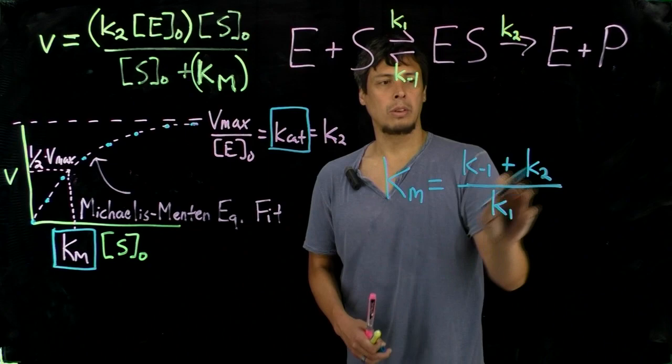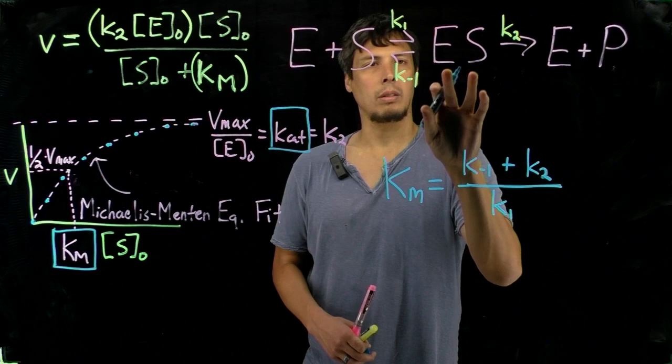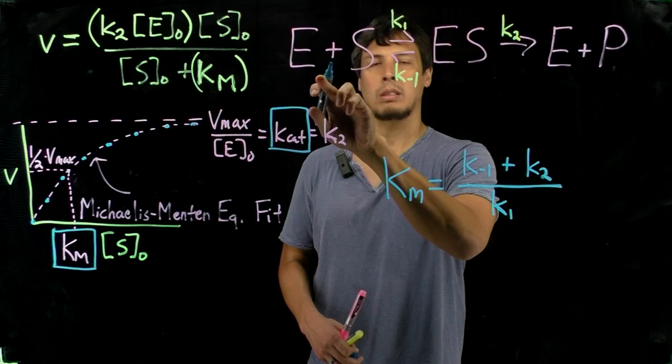Alright, so interestingly, the numerator contains rate constants for consumption of ES. So, in this case, K-1 consumes ES and converts it back to enzyme and substrate.